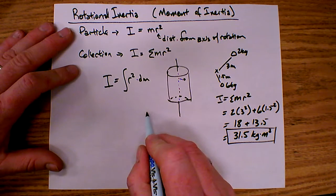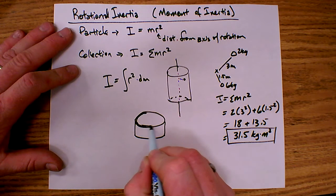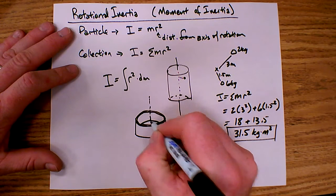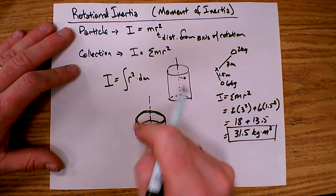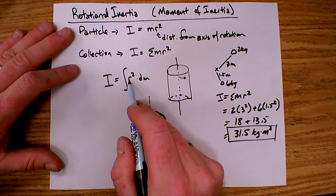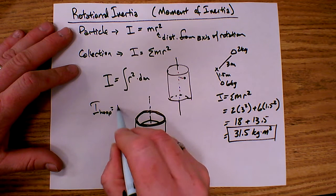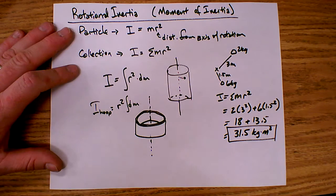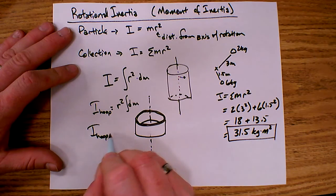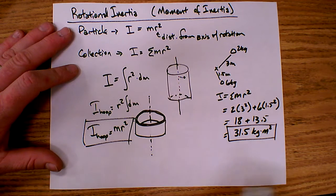Notice that in the case of a ring or a hoop, with the axis of rotation passing right through the middle, all of the mass is the same distance away, so r becomes a constant. In an integral, you can pull a constant out, so what I have for the hoop becomes r squared times the integral of dm. The integral of dm, when I add up all the little pieces of mass, gives the total mass. So for a hoop, I end up with just r squared times m, or m times r squared — that is the inertia of a hoop.